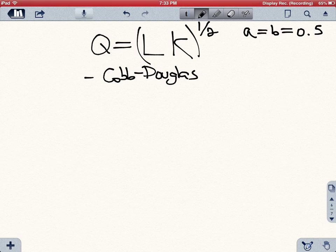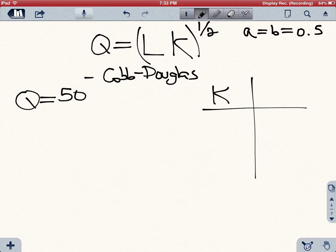So what I want you to do now is to calculate, let's assume that you know how much output you're going to produce. It's going to be 50 units of output. I want you to calculate the values of labor, if you know the capital is going to be equal to 20, 50, 100, and 125.